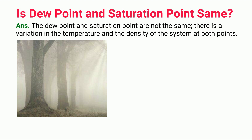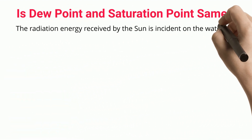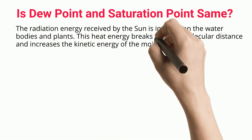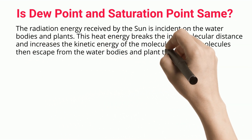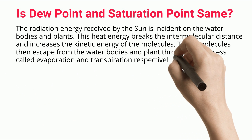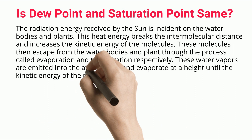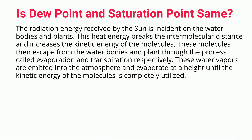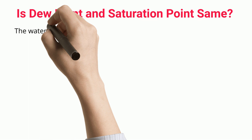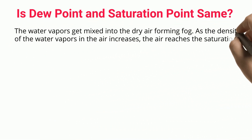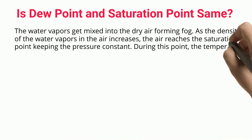The radiation energy received from the sun is incident on water bodies and plants. This heat energy breaks the intermolecular distance and increases the kinetic energy of the molecules. These molecules then escape from water bodies and plants through the processes called evaporation and transpiration respectively. These water vapors are emitted into the atmosphere and rise until the kinetic energy of the molecules is completely utilized, getting mixed into the dry air and forming fog.